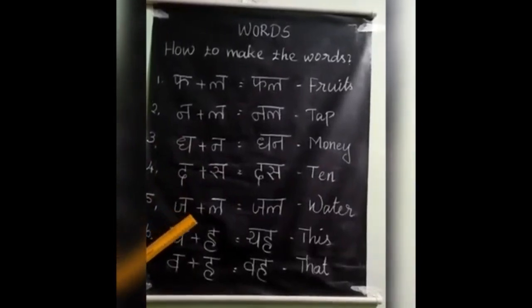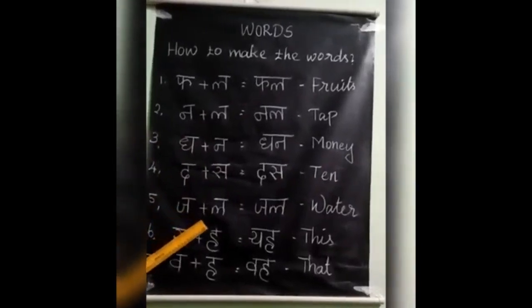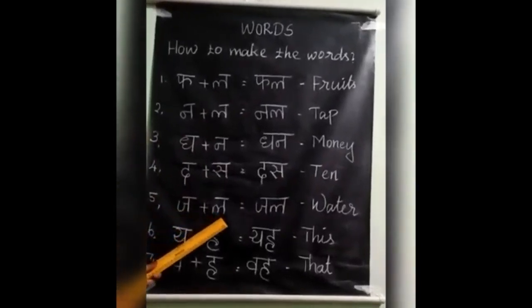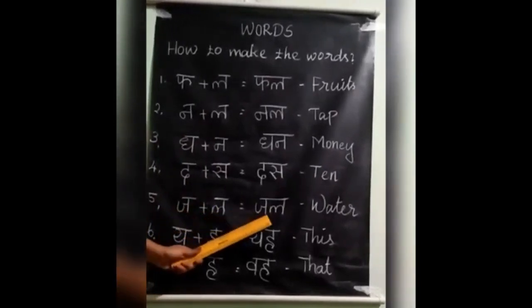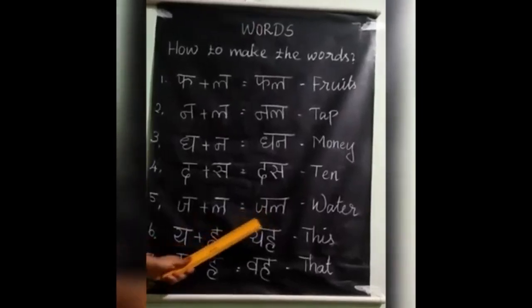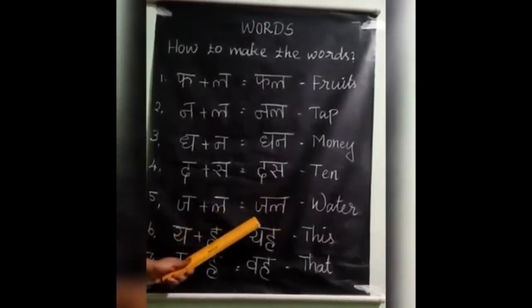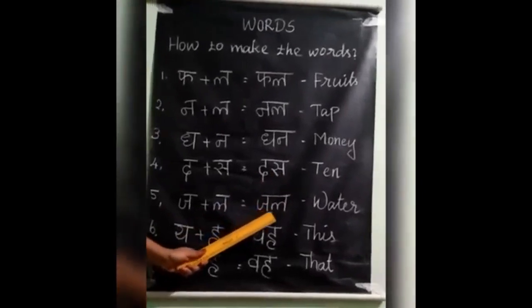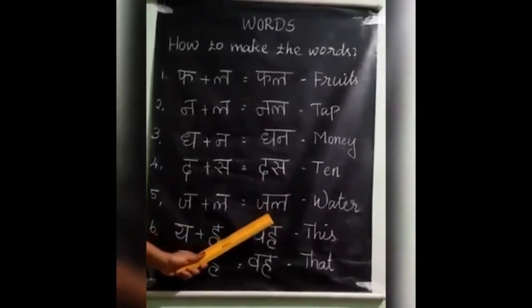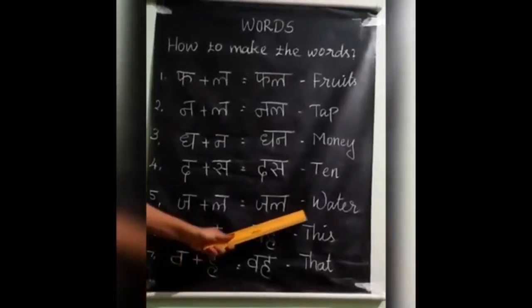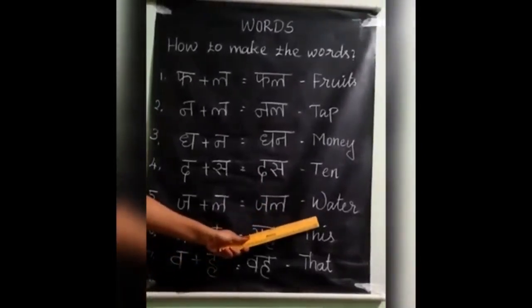Jha plus la is equal to jal. How to pronounce this? Again you say — jhal. Jal. Jal means water.